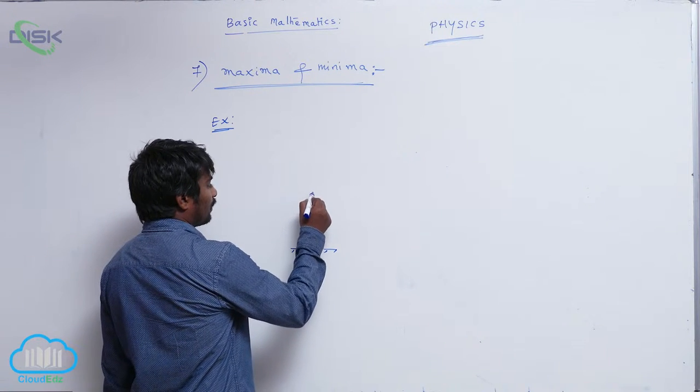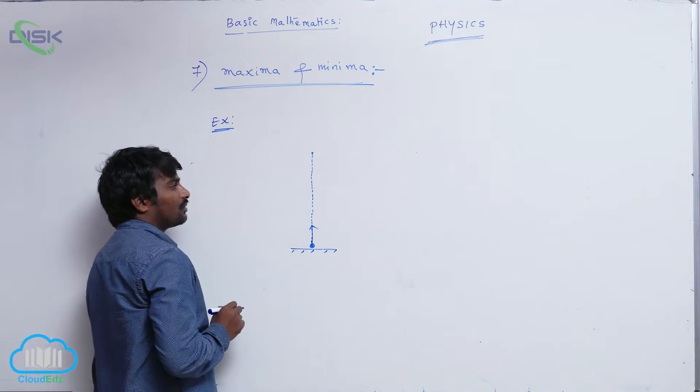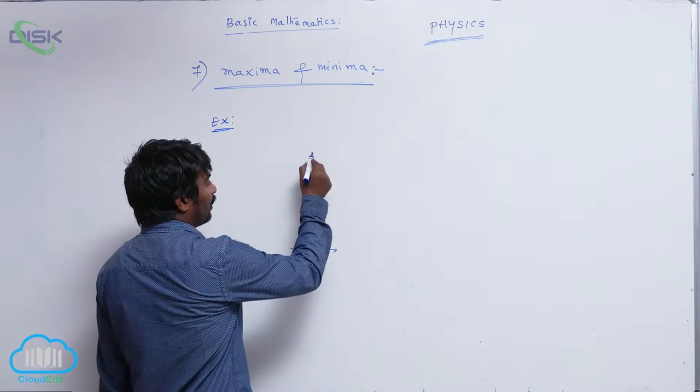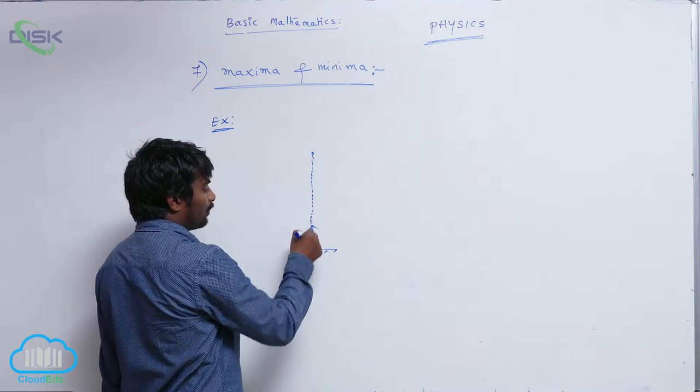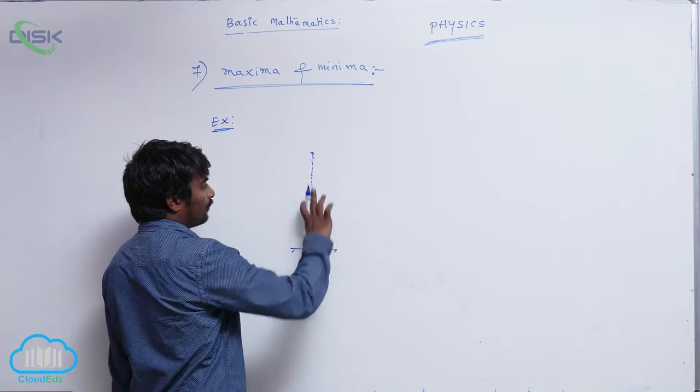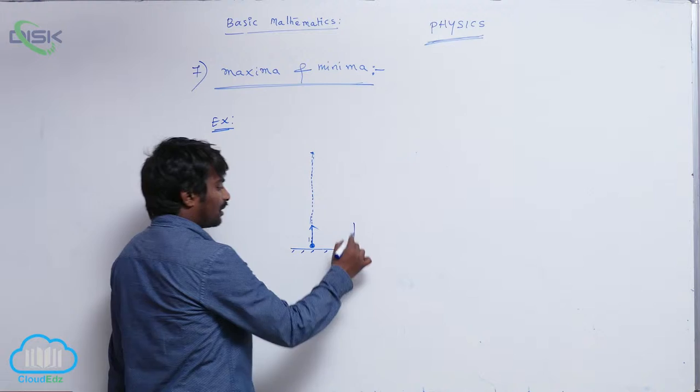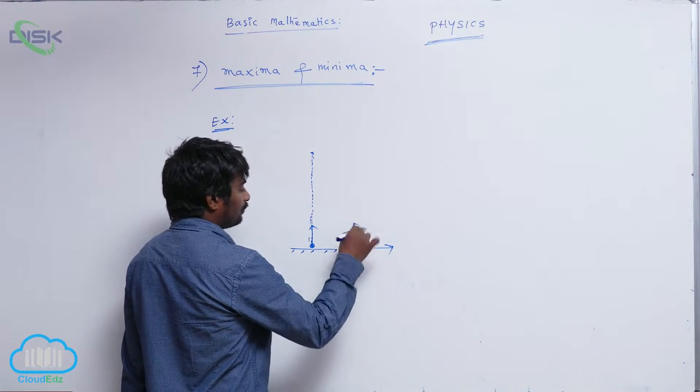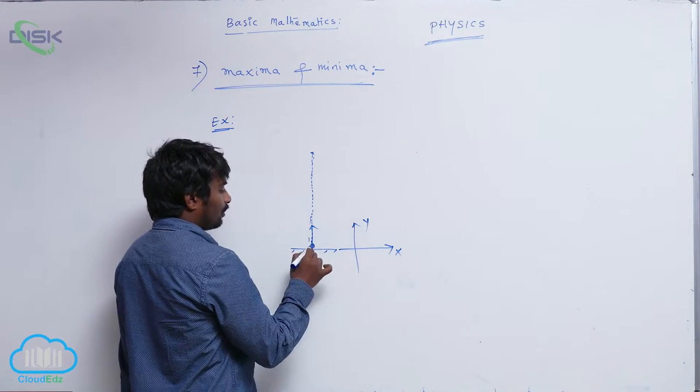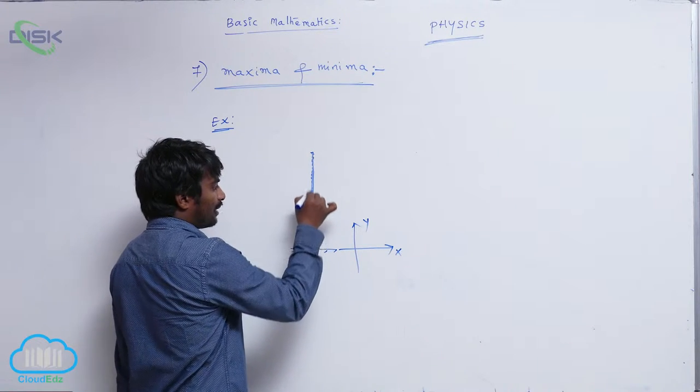It decreases, finally its velocity becomes zero, and again it returns back. That means from here to here, we say this is the maximum height. If we take a coordinate system, you can call this the maximum displacement.